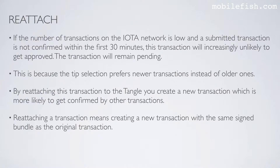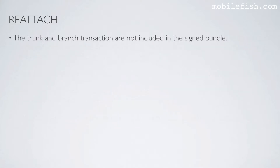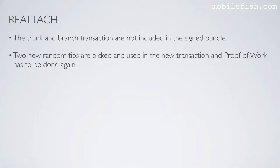Reattaching a transaction means creating a new transaction with the same signed bundle as the original transaction. The trunk and branch transactions are not included in the signed bundle. Two new random tips are picked and used in the new transaction, and proof of work has to be done again.